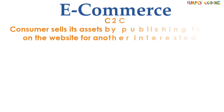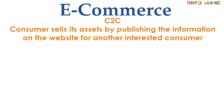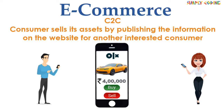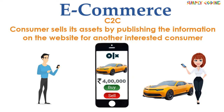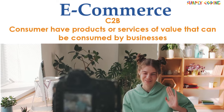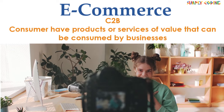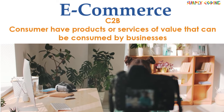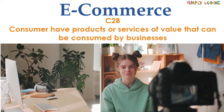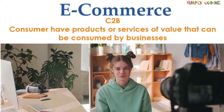Next is the C2C model, where a consumer sells any of their assets like property, cars, motorcycles, etc., by publishing the information on a website where interested consumers can view and make the purchase — for example, buying and selling on OLX, Quikr, or Craigslist. Next is C2B, or consumer to business. In this model, consumers have products or services of value that can be consumed by businesses — for example, social media influencers being paid by businesses to advertise their products.